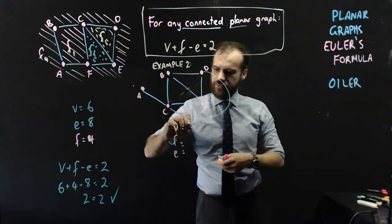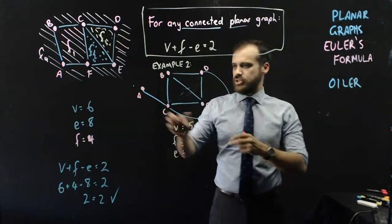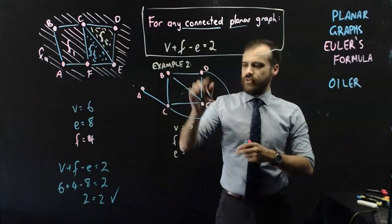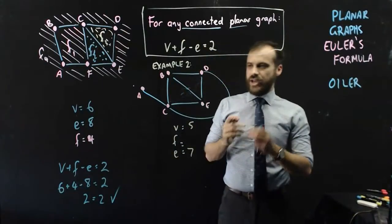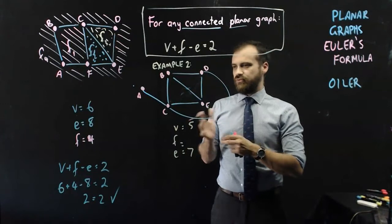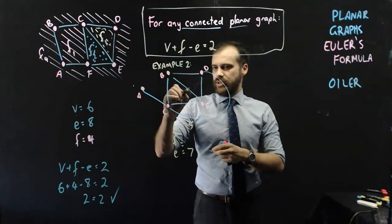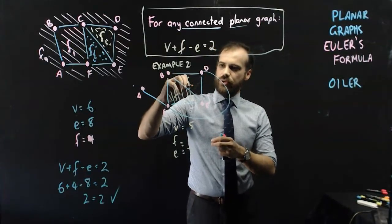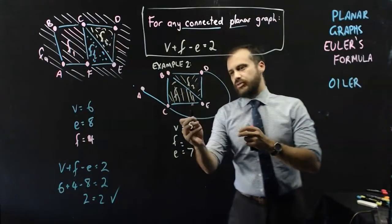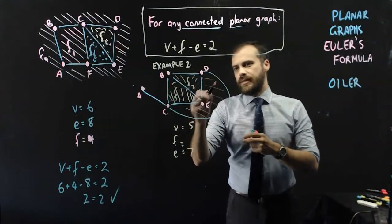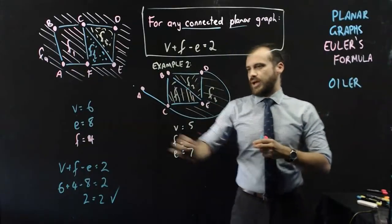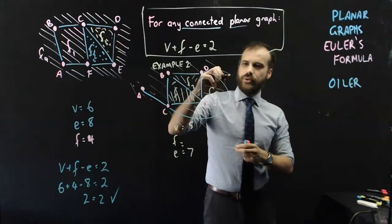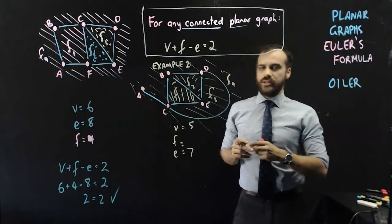Vertices, one, two, three, four, five. The E, let's do the edges. One, two, three, four, five, six, seven. And the faces. Now, you need to be really careful with your faces here. So there's one face, call that F1. Second face here, we'll call that F2. That's that bit there. A third face here, call that F3. And then a face around the outside of it, and we'll call that F4. So there are four faces.